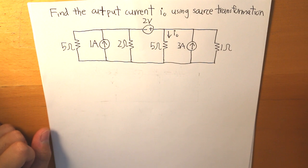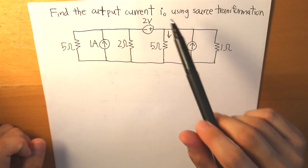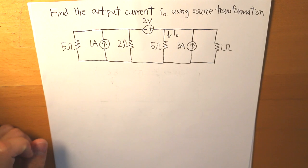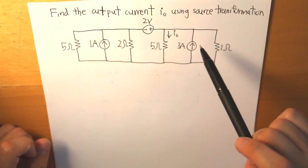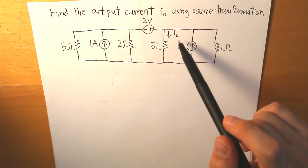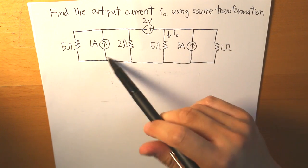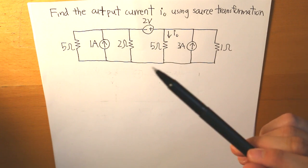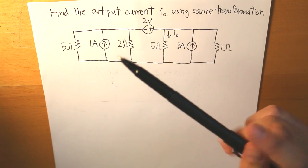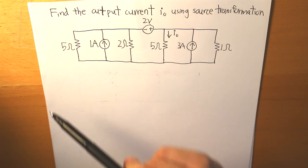We have a question here that asks us to find the output current I0 using source transformation. In this circuit there are two methods for finding I0: nodal analysis, which looks pretty complicated given the current sources, and mesh analysis, which also looks somewhat complicated. This is the reason why we have source transformation — it simplifies the problem.